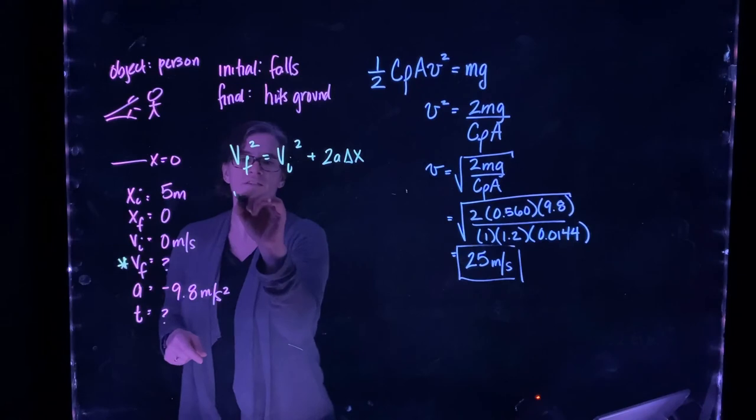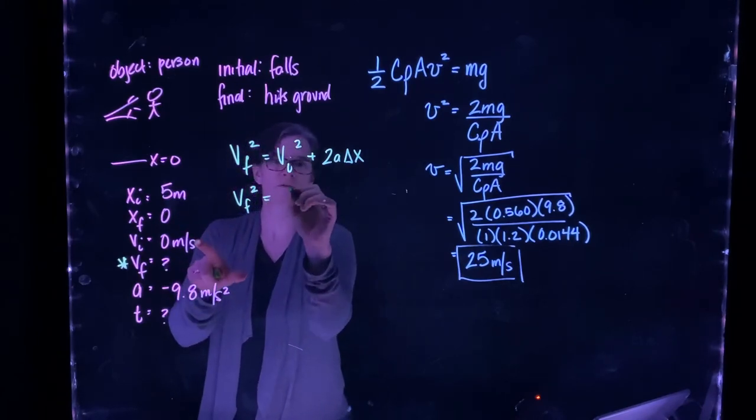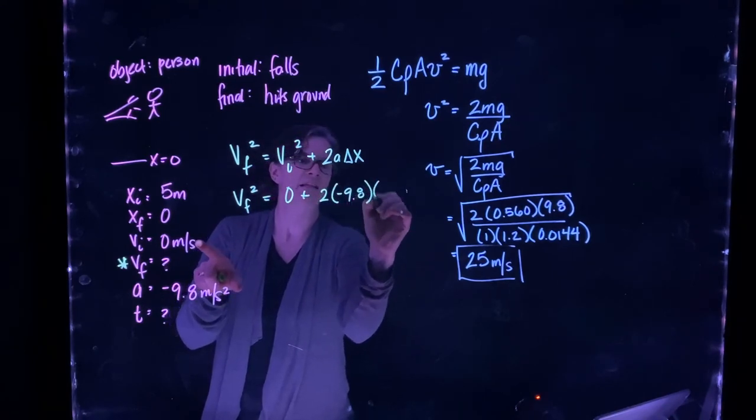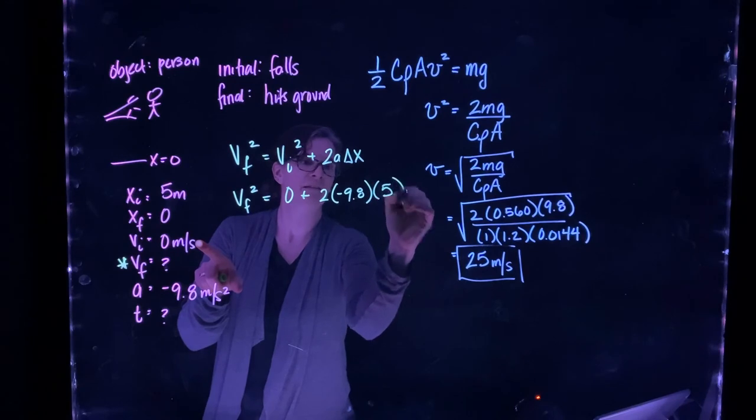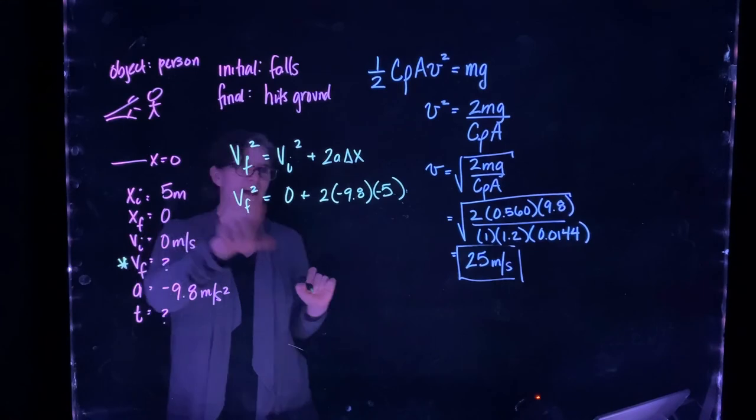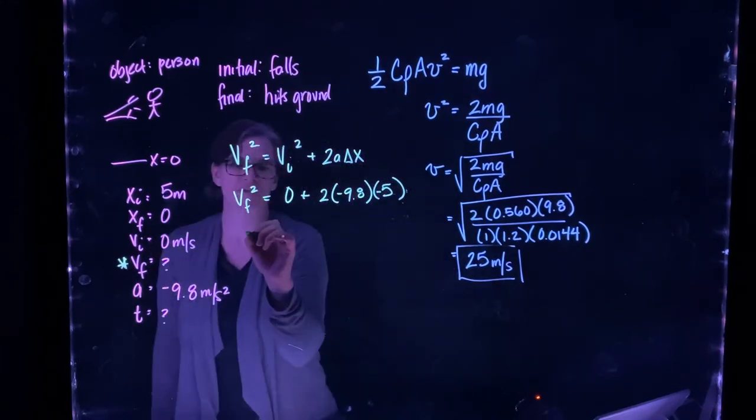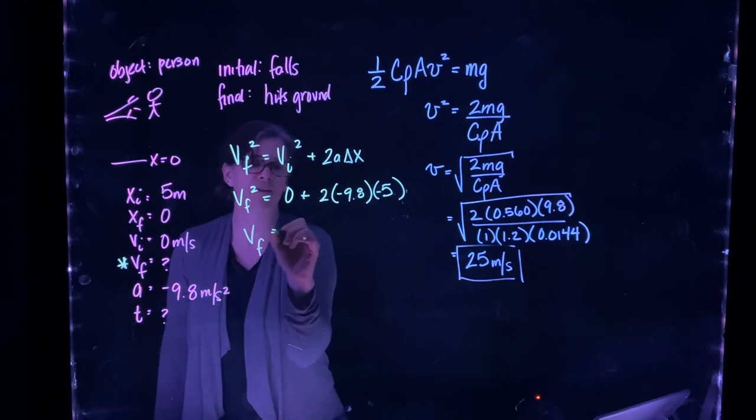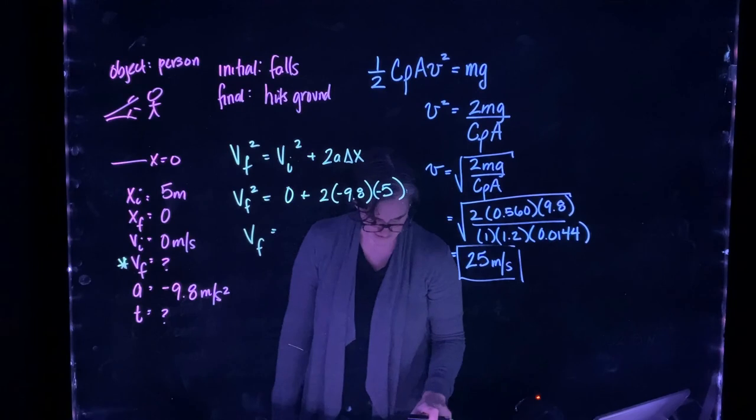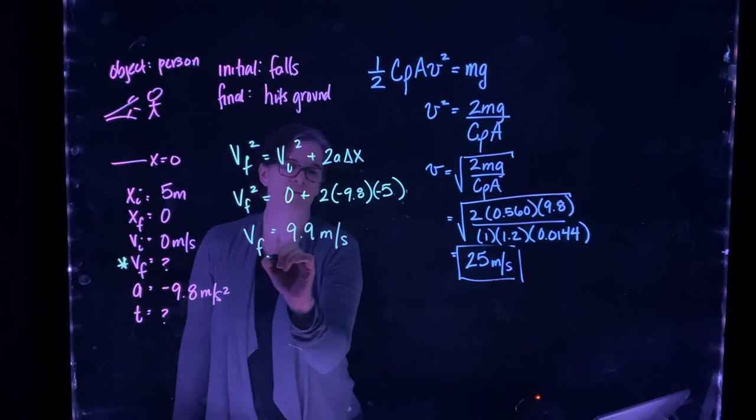So v final squared equals v initial squared, which is 0, plus 2 times negative 9.8 times 0 minus 5. So v final squared, I can solve for v final by taking the square root, and we find that v final is equal to about 9.9 meters per second.